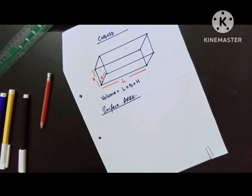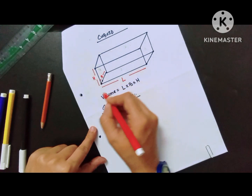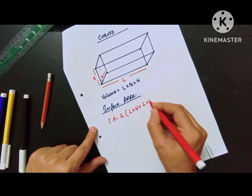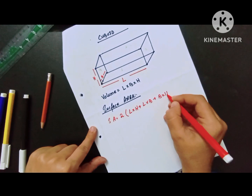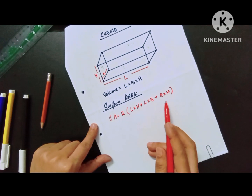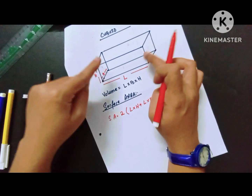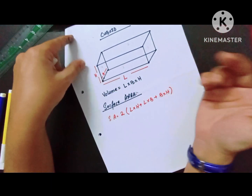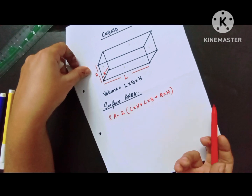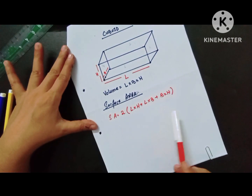So the surface area formula for cuboid is: 2 times of (length × height + length × breadth + breadth × height). That is, Surface Area = 2(LH + LB + BH). Total faces are six, and because of different dimensions we pair them up, giving us two times each combination.